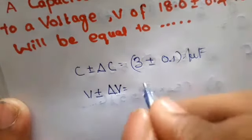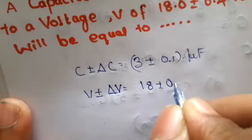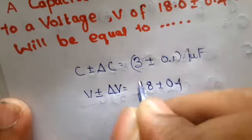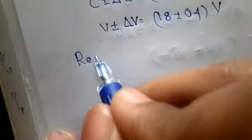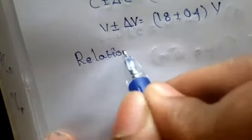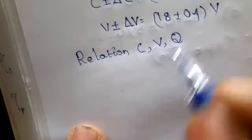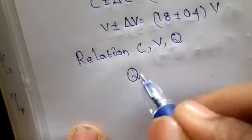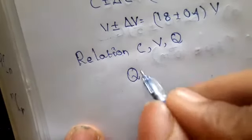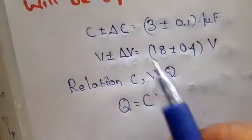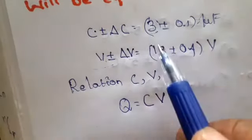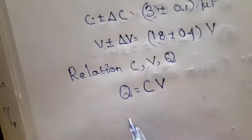Which is given to be 18 plus or minus 0.4 volts. The relation you will study in electrostatics connects C, V, and Q. That is Q equals C times V. First we can find the correct value of these two terms.